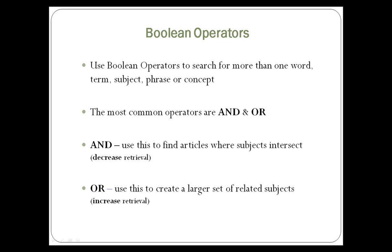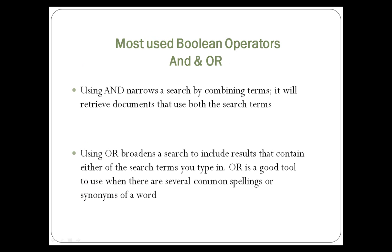Use Boolean operators to search for more than one word, term, subject, phrase, or concept. The most common operators are AND and OR. Using AND narrows a search by combining terms — it will retrieve documents that use both search terms. Using OR broadens a search to include results that contain either of the search terms you type in. OR is a good tool to use when there are several common spellings or synonyms of a word.